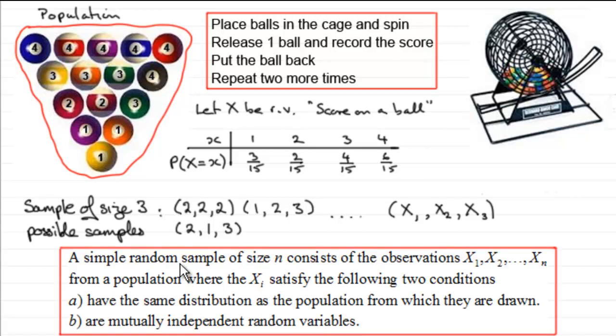And so, in general, if we're looking at a simple random sample of size n, it consists of the observations X1, X2, all the way down to Xn. And it's drawn from a population where the Xi satisfy the following two conditions. And that is, they have the same distribution as the population from which they are drawn, and B, they are mutually independent random variables.